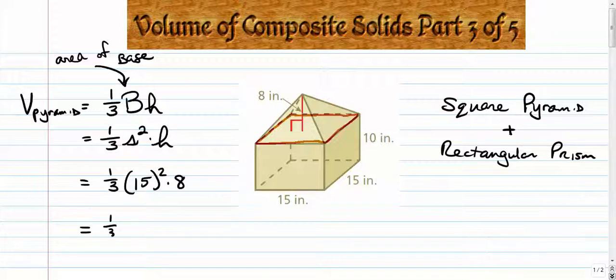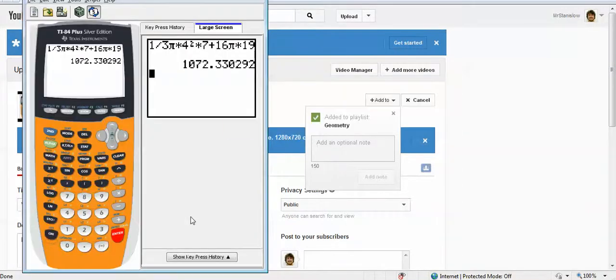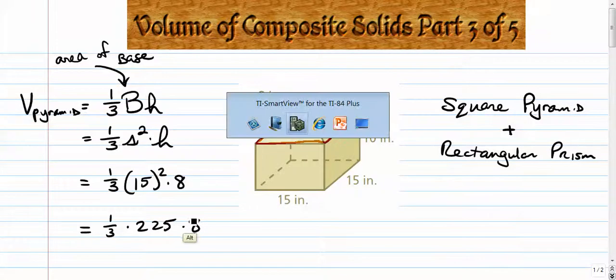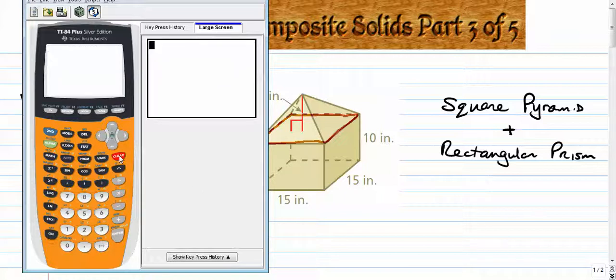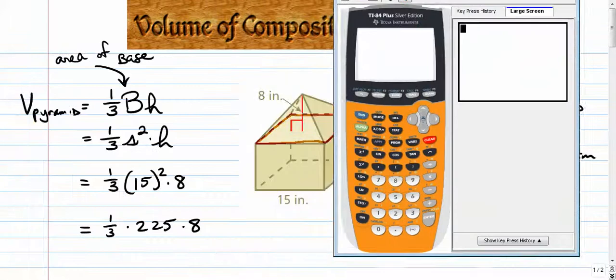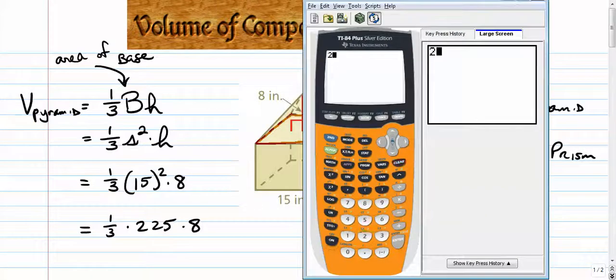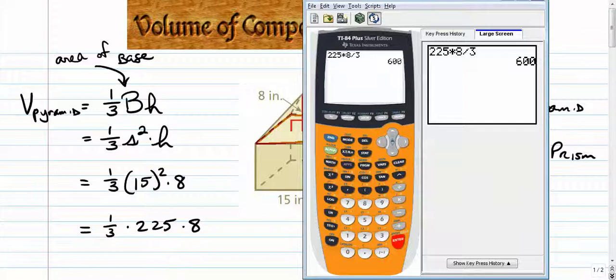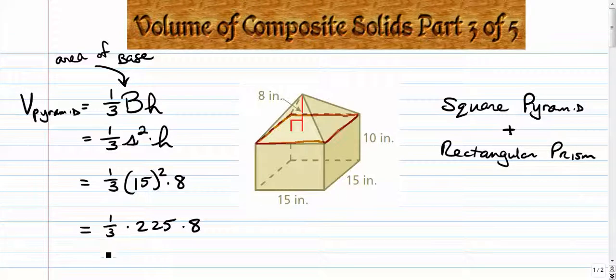One-third times 225 times eight. And that'll leave us with one-third times 225 times eight is 600. Alright, that's easy enough. So we have 600 cubic inches for the pyramid.